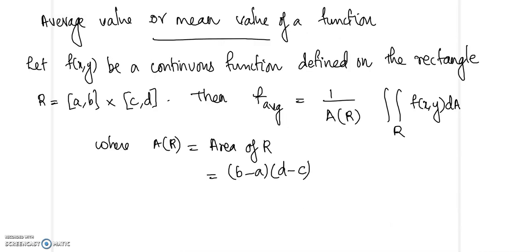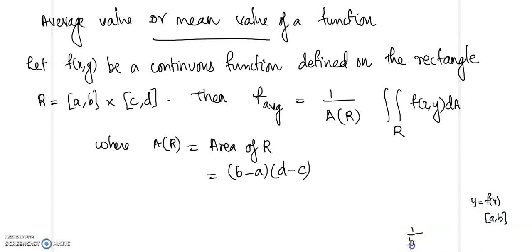Now let us look at how to find the average value or mean value of a function. If we are given a function y = f(x) over the closed interval [a, b], its average value is given by (1/(b−a)) times the integral from a to b of f(x) dx.